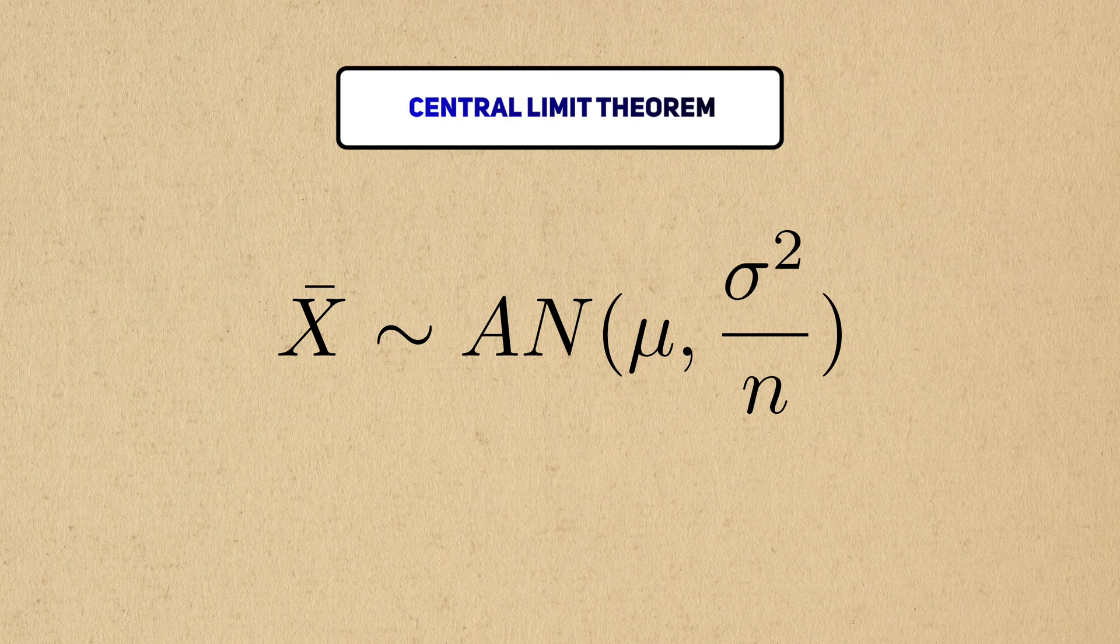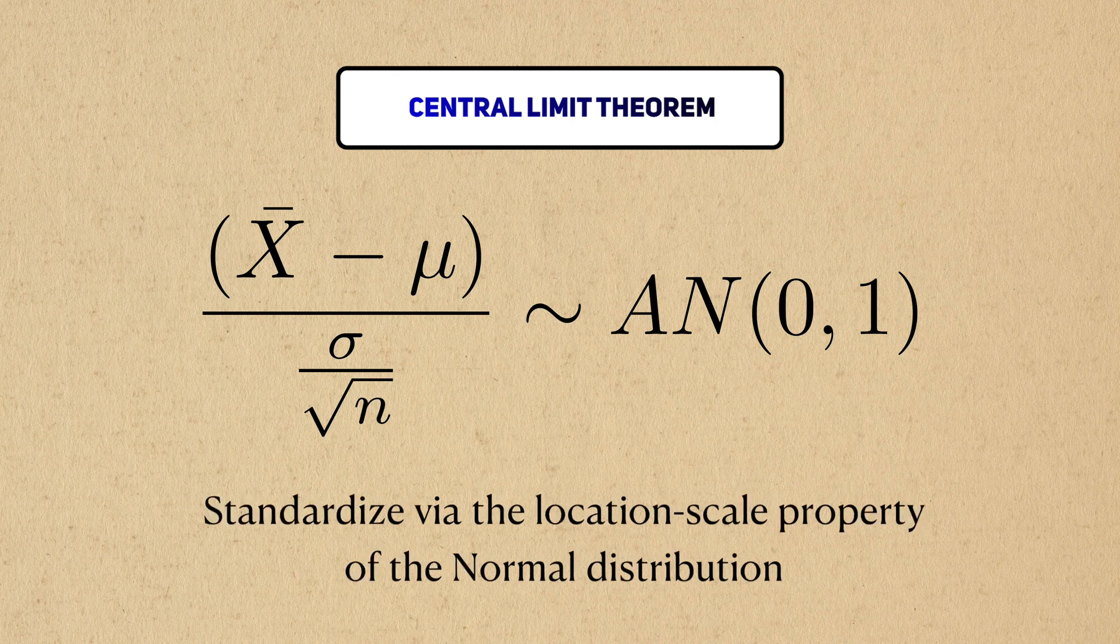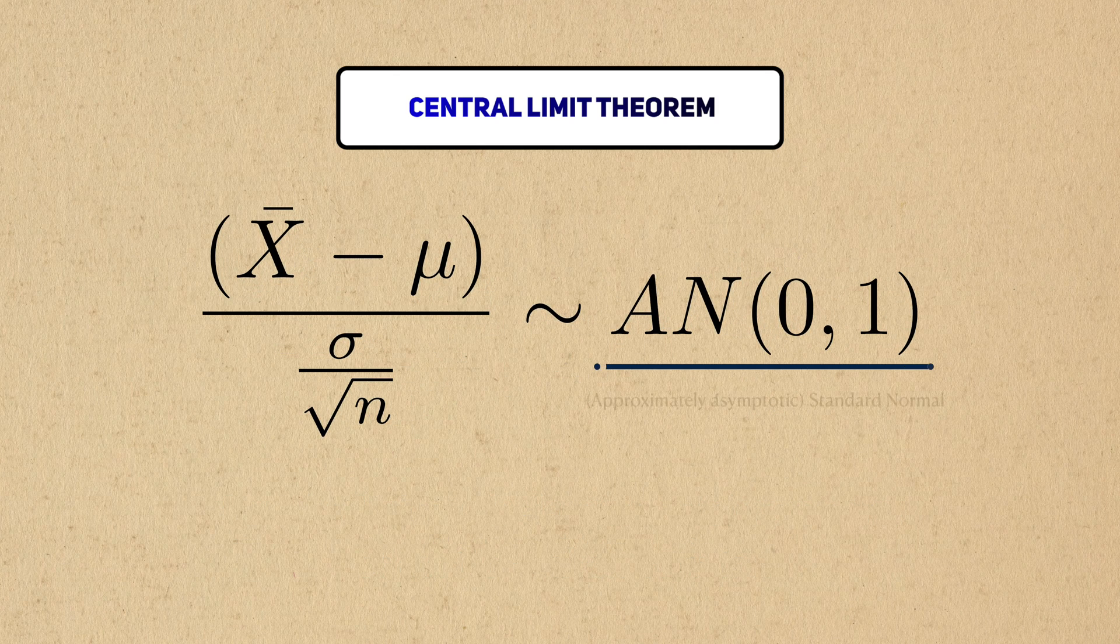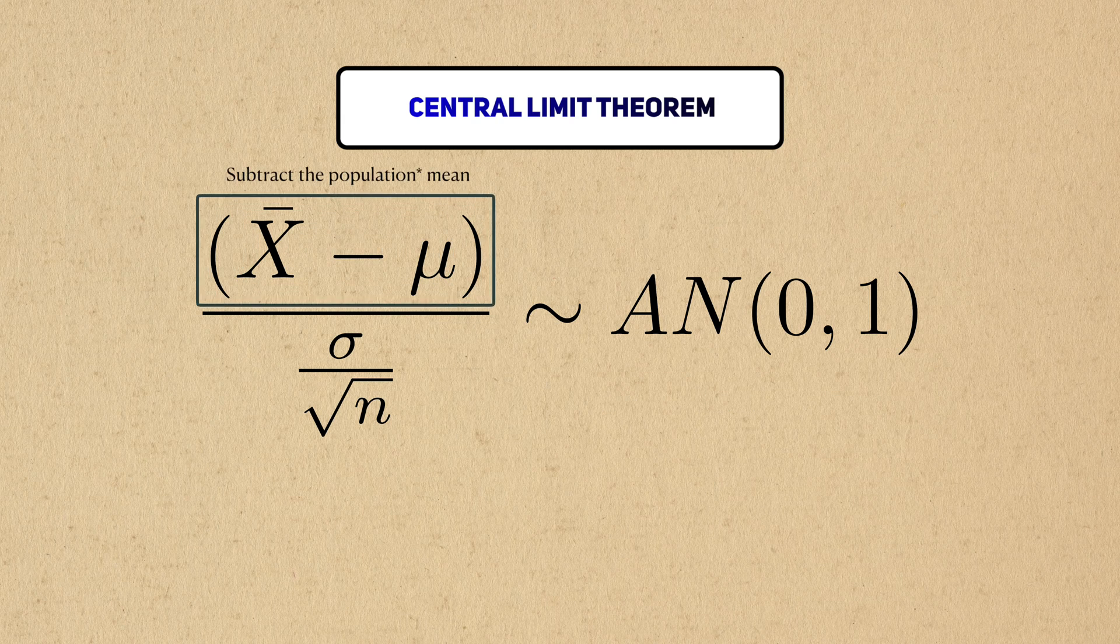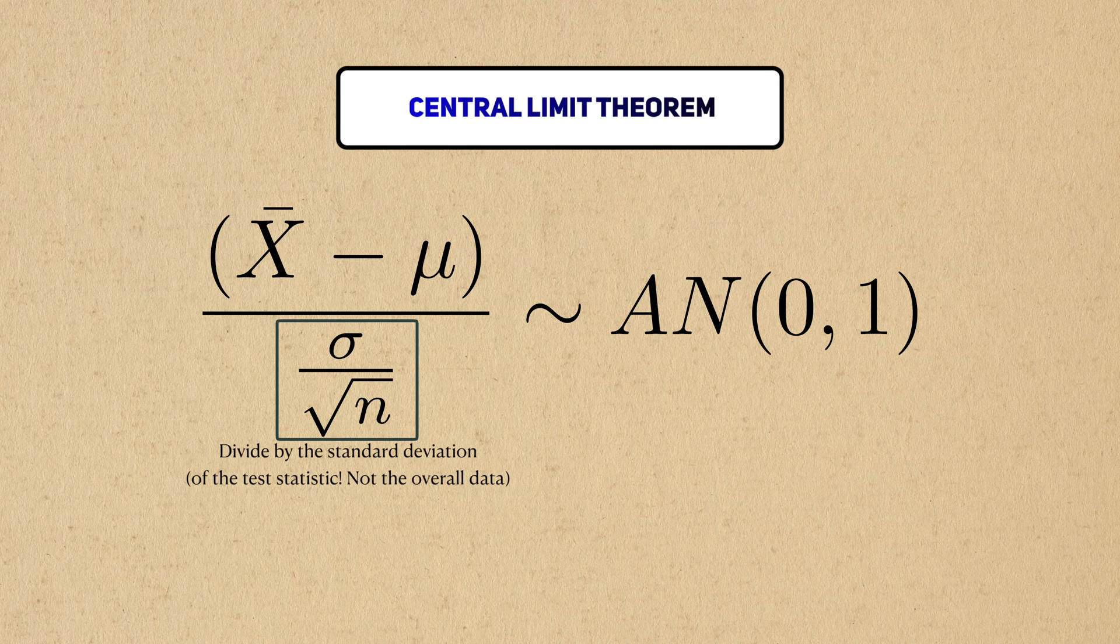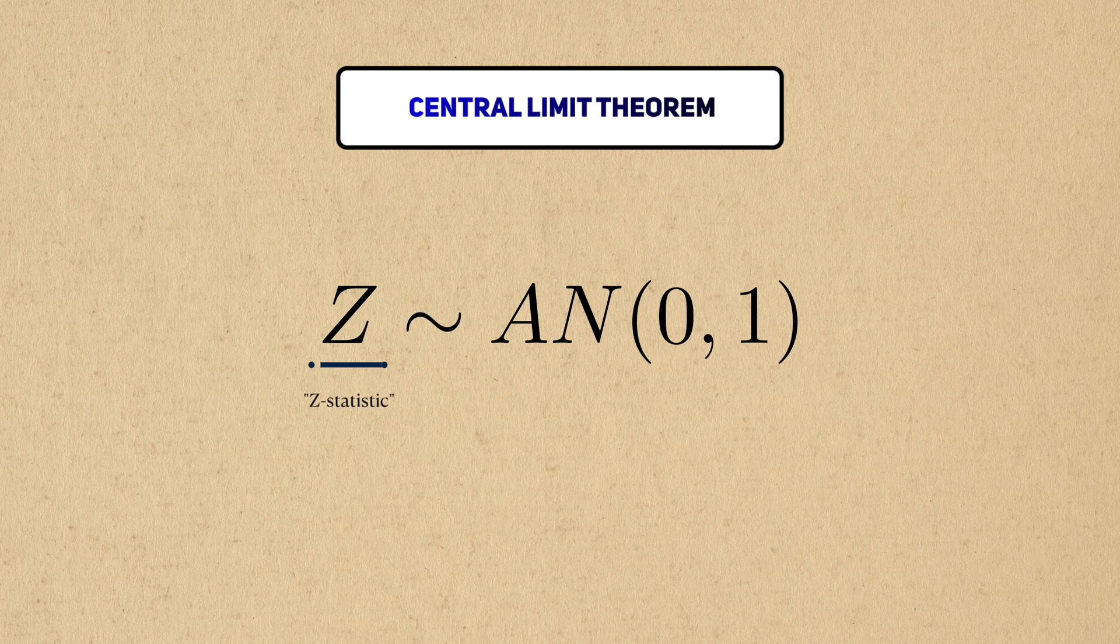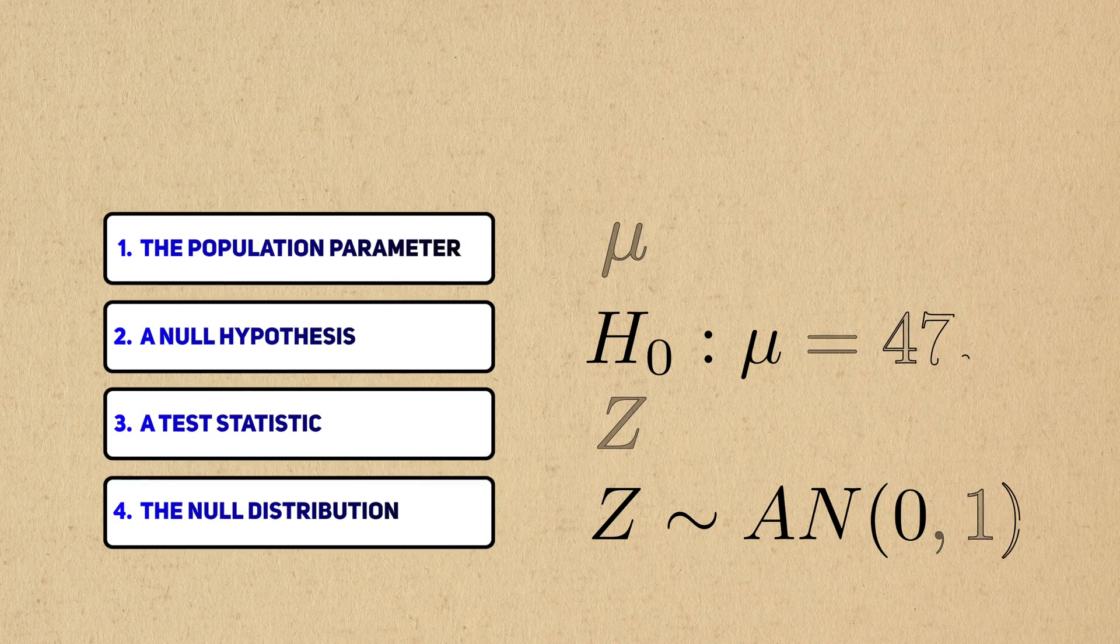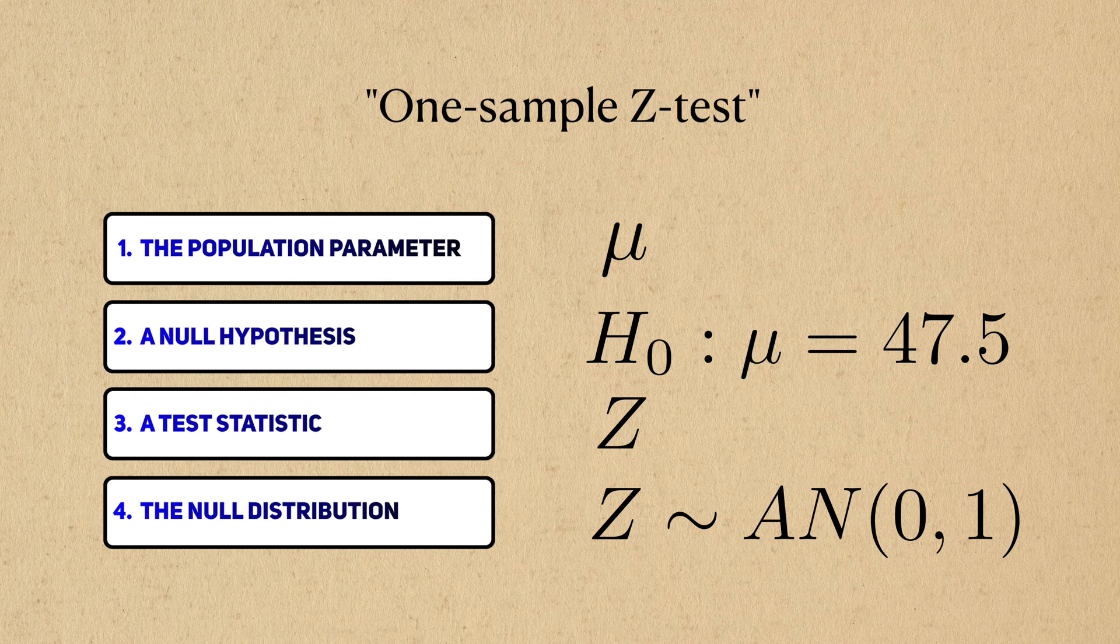Instead of working with this form of the distribution, statisticians prefer to work with the standardized distribution instead. To make sure that the test statistic has a standard normal distribution, we first subtract the sample mean and divide this by the population standard deviation. We'll call this new standardized statistic Z, or a Z statistic. If you've taken a statistics course before, then you may recognize that these ingredients together form the Z test, a hypothesis test for the population mean based on the Z statistic.